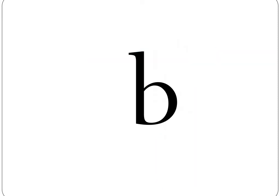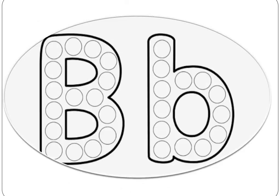How can we write small B? Straight line down, half to the middle, circle down. So we learned capital B and small B. Okay, hope you enjoyed the lesson. See you again. Bye!